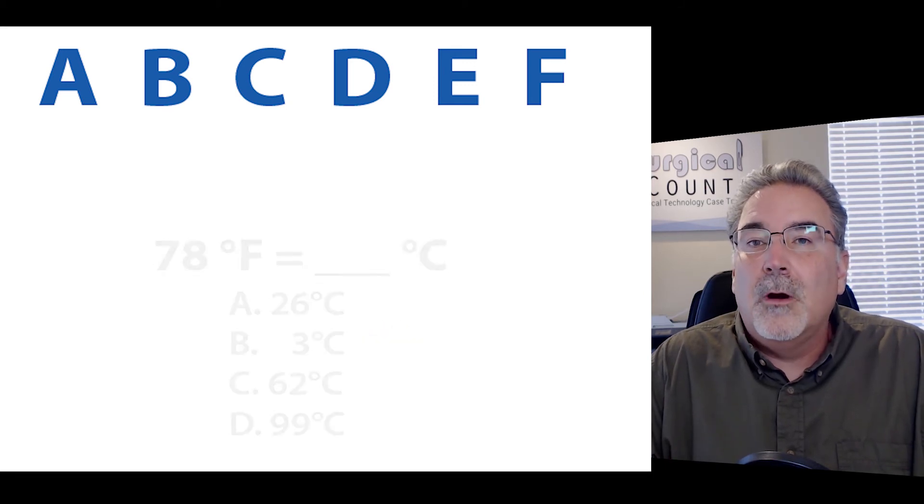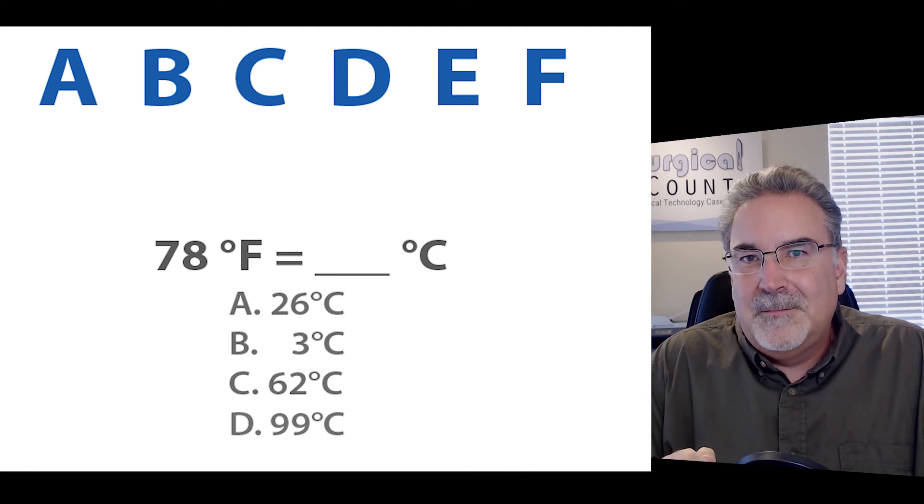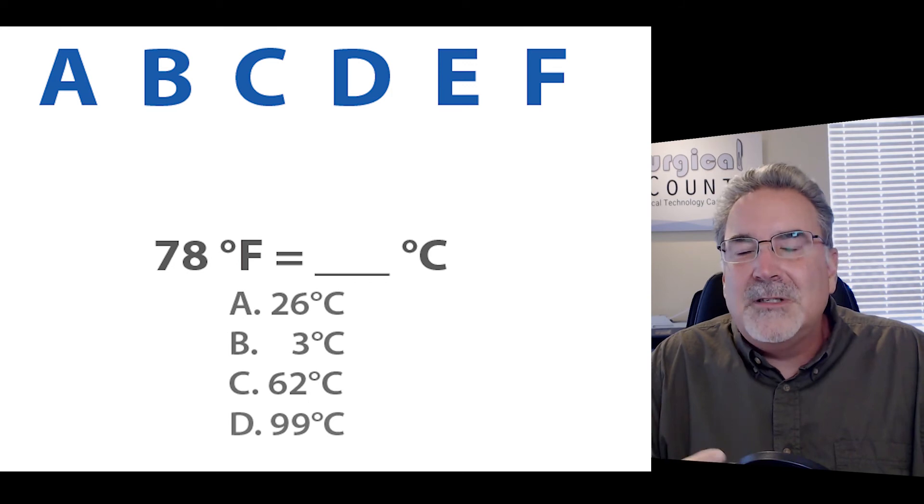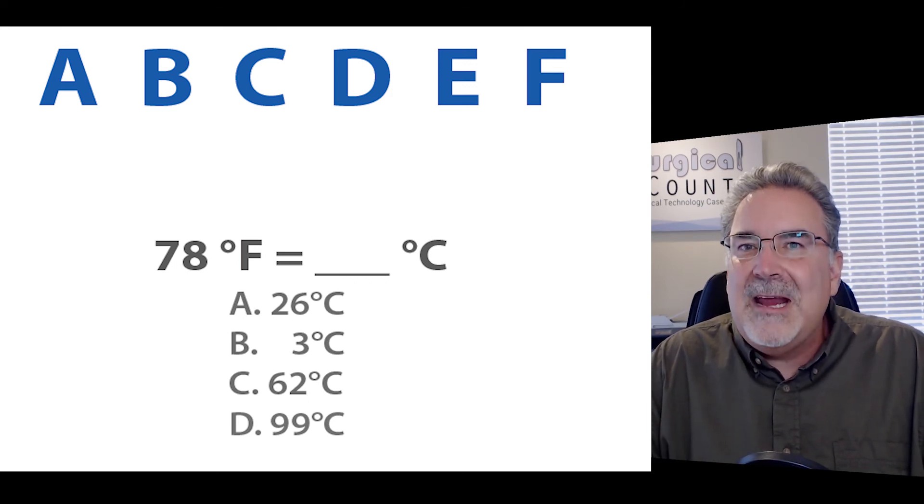So let's try one more. 78 degrees Fahrenheit in degrees Celsius. Well, we're going to start off by making the numbers a little easier to use. We can round 78 to 80. That makes a nice round number. So let's use 80 as our F.